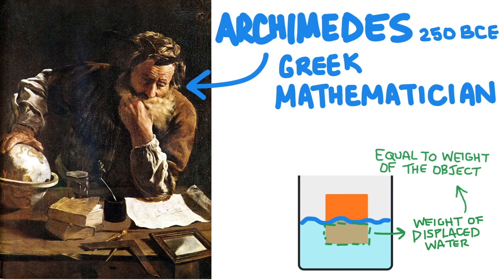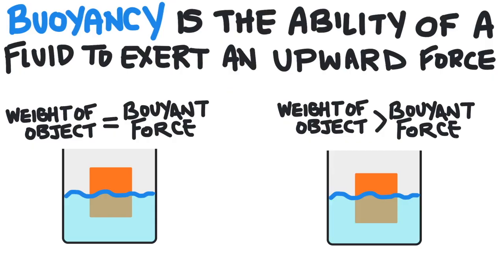As long as the weight of the object is equal to the force of the displaced water, the object will float. This force that pushes up the object is called the buoyant force. Buoyancy is the ability of a fluid to exert an upward force on an object. If the weight of an object is equal to the buoyant force, the object floats. But if the weight of the object is greater than the buoyant force, the object sinks.